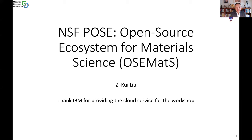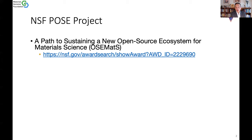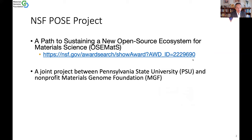The NSF POST project program title is called 'A Path to Sustaining a New Open Source Ecosystem for Materials Science.' The abstract is available on the NSF website by searching project number 222-9690. It is starting this year and is a one-year project for phase one, after which we plan to apply for phase two. This is a joint project between Pennsylvania State University and the non-profit Materials General Foundation.